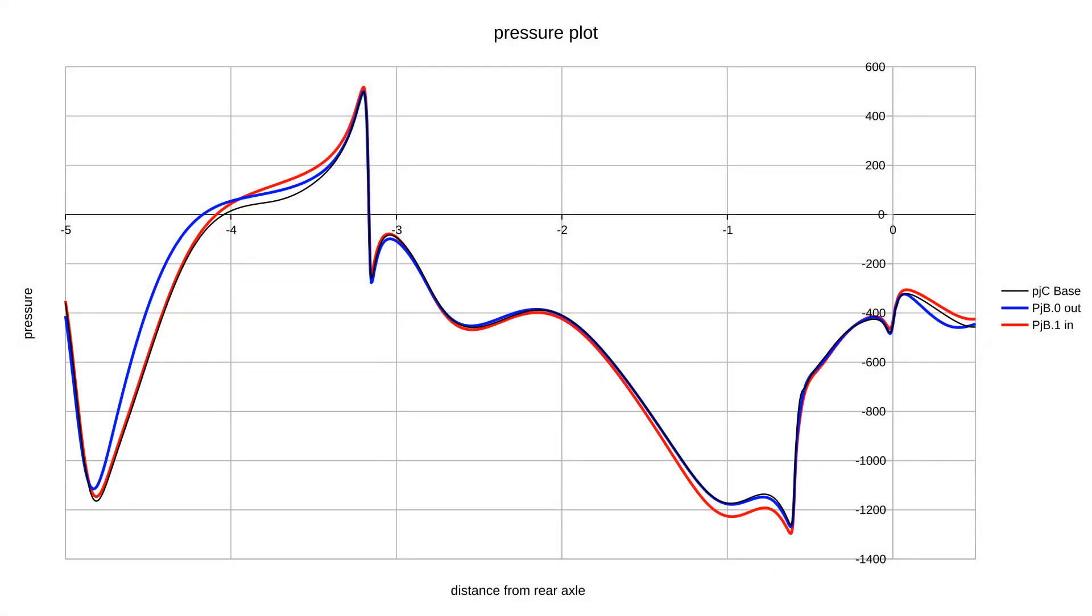The centreline plot shows how much pressure under the chassis has increased. The direct comparison is the red and black lines, as these have the same front wing. Despite removing significant amount of downforce from the front, the overall downforce for the body doesn't change.